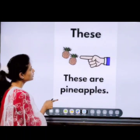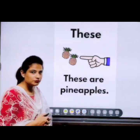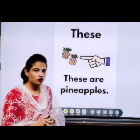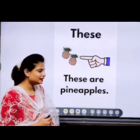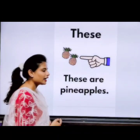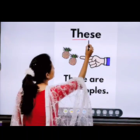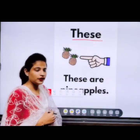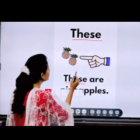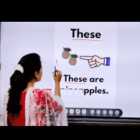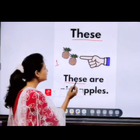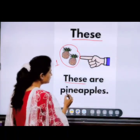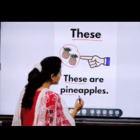Here you can see two pineapples — it means plural. So what is the plural form of 'this'? It is 'these'. When there are more than one object, you will use 'these'. When there was only one pineapple, we were using 'this'. Now there are two pineapples, so we are using 'these' here. These are pineapples.